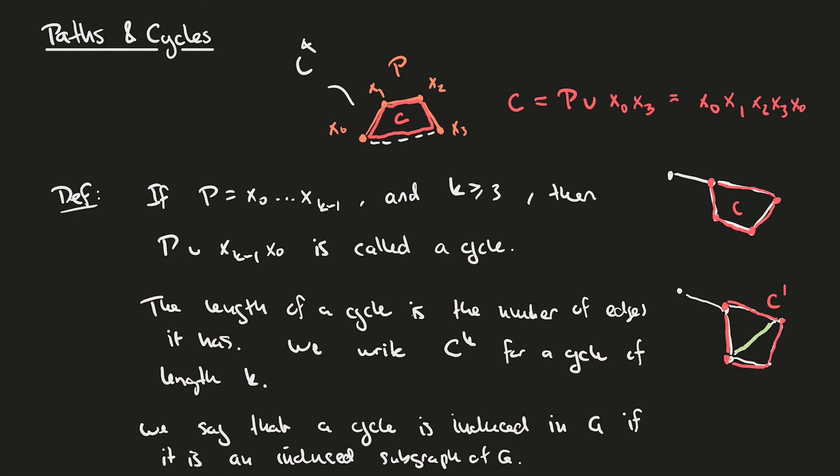Therefore, the concept of an induced cycle allows us to mark if there are edges in the graph G that cut the cycle in some way. Such edges that go in between vertices of a cycle are called chords. Thus, induced cycles in a graph G are exactly those cycles that don't have any chords in them.